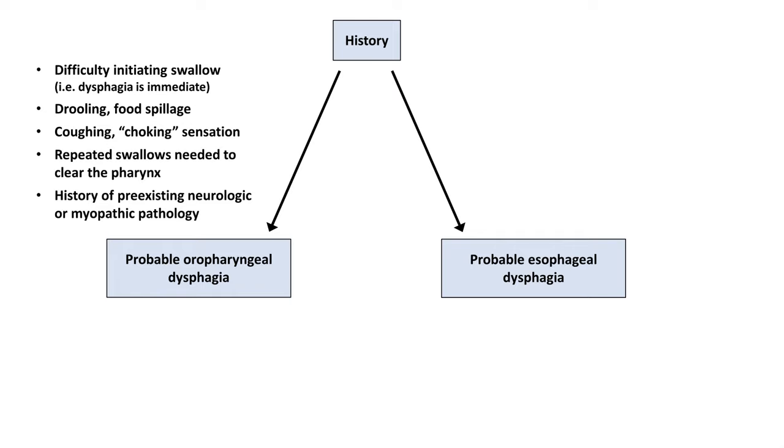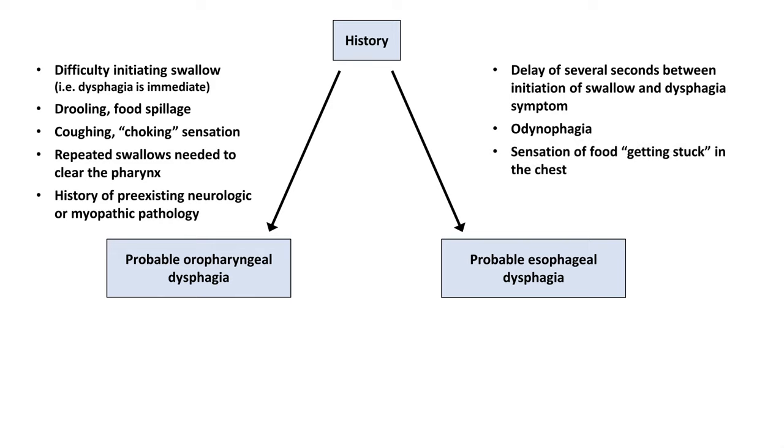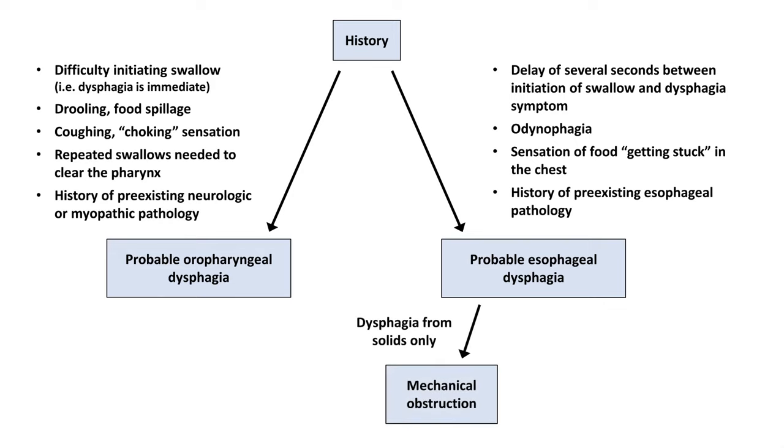On the other hand, features that suggest probable esophageal dysphagia include a delay of several seconds between the initiation of a swallow and the dysphagia sensation, the presence of odynophagia which is relatively uncommon in oropharyngeal etiologies with the exception of mucositis, a sensation of food getting stuck in the chest. Specifically suggests an esophageal cause when patients point to their sternum as the location from which the sensation appears to arise, and of course a history of preexisting esophageal pathology. History can provide further clues in the case of esophageal dysphagia. If there is dysphagia only from solid foods, it suggests a mechanical obstruction versus a similar degree of dysphagia from solids and liquids alike, that suggests a motility disorder.